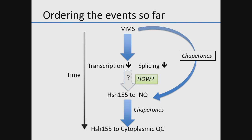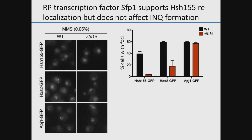We are investigating the connection between the transcriptional response and quality control of this splicing factor. One approach is mutating a ribosomal protein gene transcription factor called SFP1. SFP1 is involved in maintenance of ribosomal protein gene expression, but when deleted, cells can no longer dynamically respond to stress. In response to TOR signaling, SFP1 moves from cytoplasm to nucleus, and this movement is important for rapidly shutting off RP gene expression — which is dysregulated in SFP1 mutants.